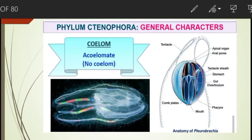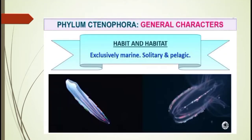There is no coelom present in the ctenophores, so they are called acoelomates. They are exclusively marine forms. They are solitary, meaning they live singly, or pelagic — relating to the open seas or oceans, living or growing at or near the surface of the ocean, far from the land.